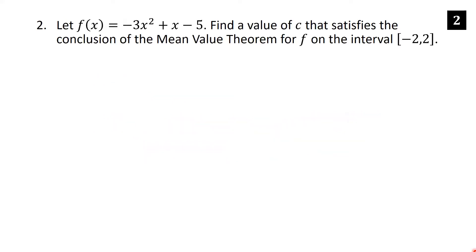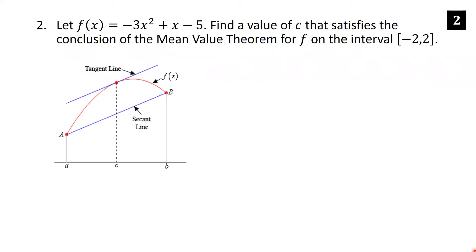Let f of x equal negative 3x squared plus x minus 5. Find the value of c that satisfies the conclusion of the Mean Value Theorem for f on the interval negative 2 to 2. So just a quick overview of the Mean Value Theorem and then I'll spell it out explicitly.